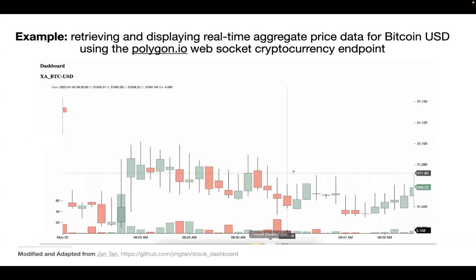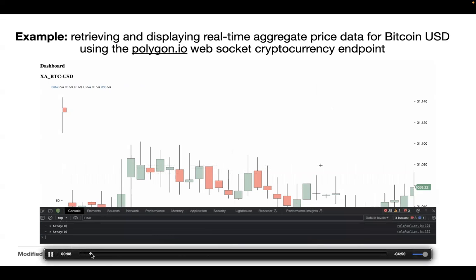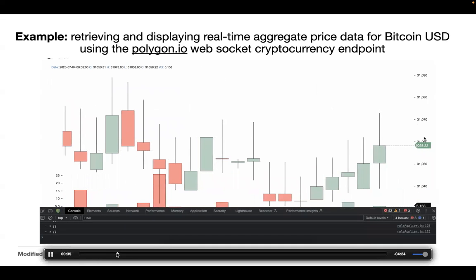This is an example of how we're retrieving and displaying the real-time aggregates window for Bitcoin USD. We are using the WebSocket cryptocurrency endpoint from PolygonIO. On the left side of this dashboard, we can see the volume trading in every aggregate window. On the right side of this graph, we can see the prices of each aggregate window. If we play this video, we can zoom in and zoom out, and the console here helps us see whether we actually receive the real-time data.